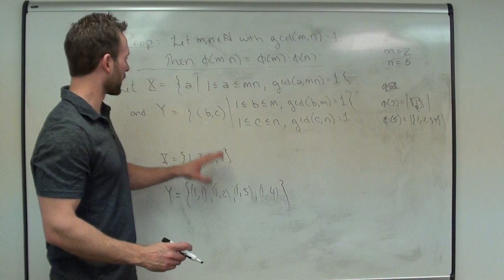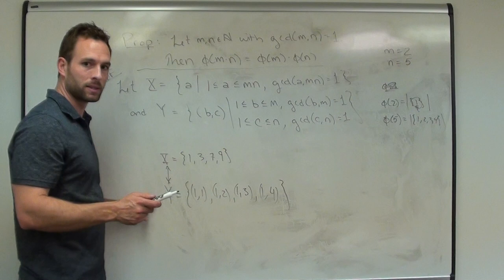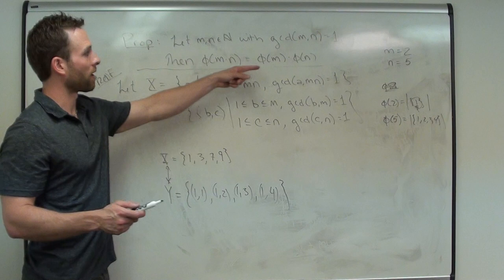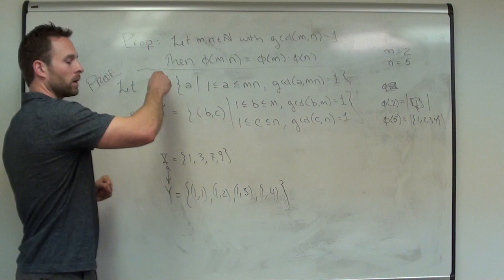We're going to define a 1-to-1 and onto function between X and Y. If it's 1-to-1 and onto, then these two sets have the exact same cardinality. The cardinality of X is phi(mn), and the cardinality of Y is phi(m) times phi(n). So that shows those two things are equal — we need to display a bijection between X and Y.